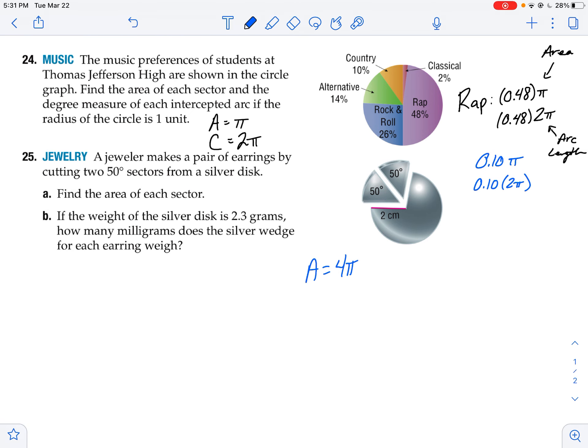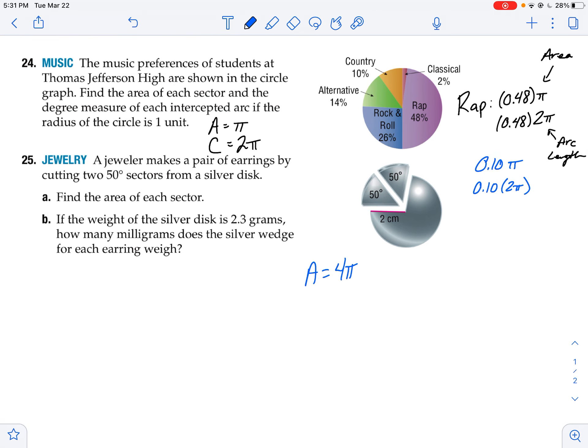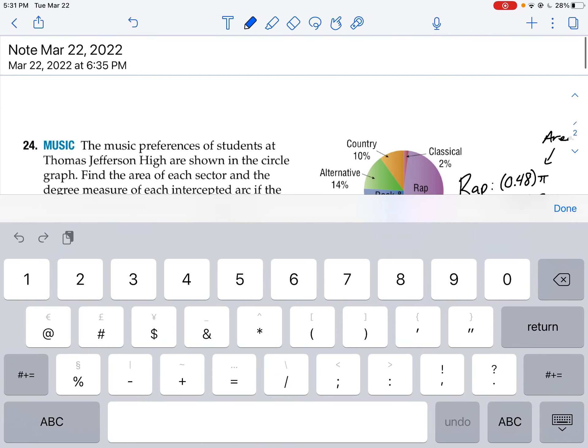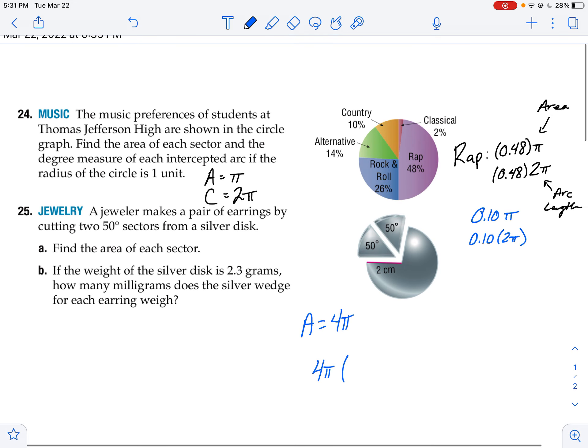The area of each sector would be, I have 3 of them. I have 4 pi times 50 over 360. I have another 4 pi times 50 over 360. And I have 4 pi, that big part, that big part is 260 out of the total 360. So that's the area of each sector there.